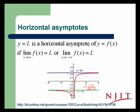We say that y equals L is a horizontal asymptote of y equals f of x if the limit as x goes to infinity of f of x is L, or the limit as x goes to negative infinity of f of x is L. What we're saying is, as x gets large, does the y value get close to something in particular?